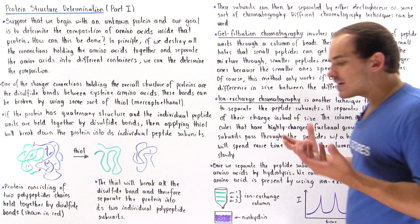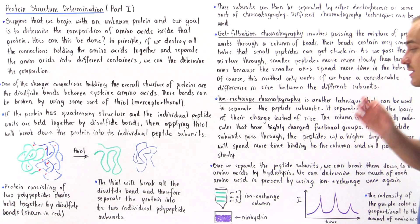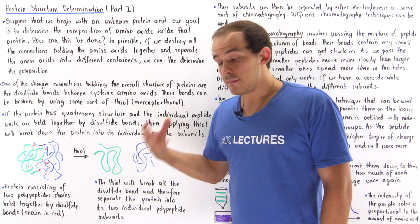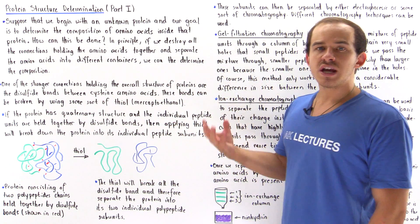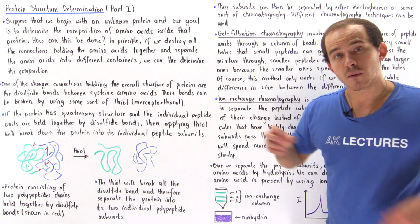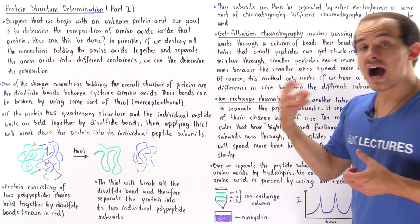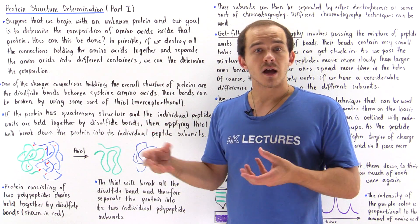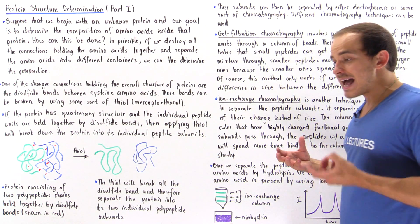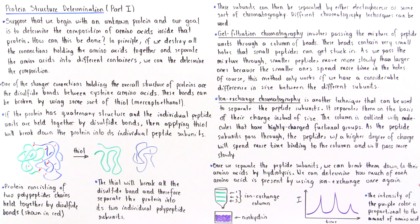Once we have our two beakers each containing its own individual polypeptide subunit, we want to hydrolyze our amino acids. We take the polypeptides, mix them with hydronium in the presence of water, and the hydrolysis reaction breaks our polypeptide into its individual amino acids. We now have two beakers that consist simply of amino acids. Because each amino acid has its own unique side chain R group with its own unique charge, we can also separate our amino acids in each beaker using ion exchange chromatography.